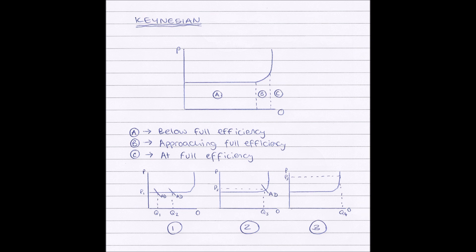However, as we move into section B, we begin to approach full efficiency. So it does begin to cost firms if they increase their output.